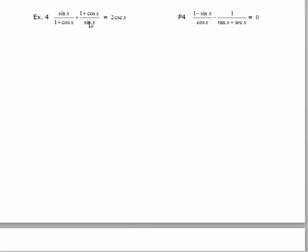So this first one, example 4, I'm going to rewrite again so that we have a little room to work with. The LCD is the product of 1 plus cosine x and sine x, so I'll multiply by the missing factor.